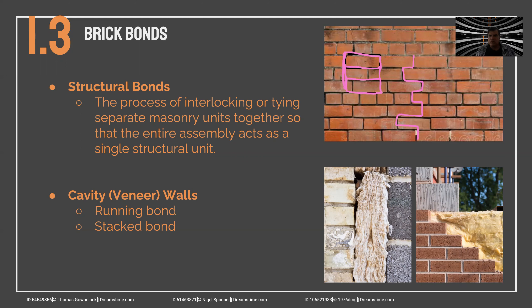Another possibility is to have what is called cavity or veneer walls. You can use a running bond or stacked bond to create a space — a cavity — between two walls. Or you can have the bricks serve as just a veneer — a facing — attached to a wall made out of another material.